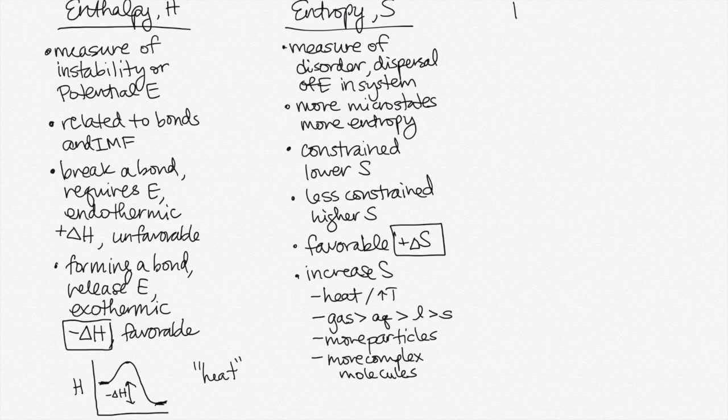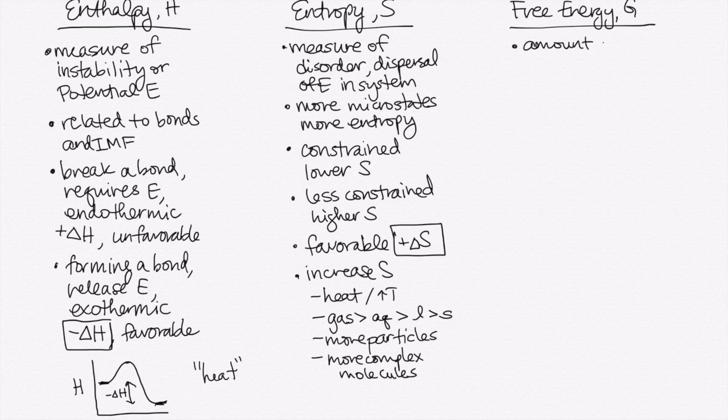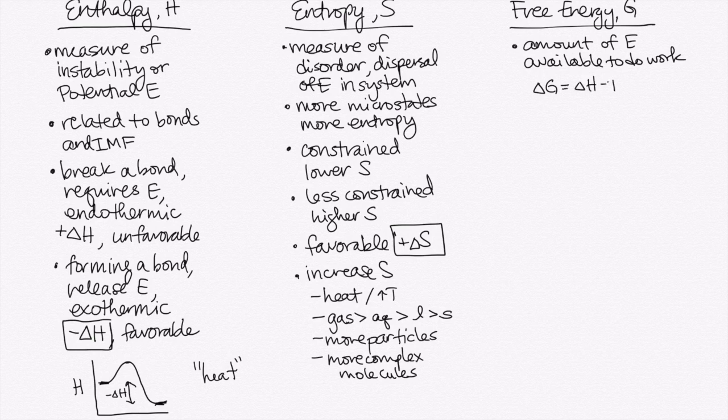And then finally, we'll talk about free energy. Free energy has this symbol G. And there's two ways that we think about this. One is that it's the amount of energy from a process that's available to do work. That's why we call it free. And our equation helps clarify: delta G equals delta H minus T delta S.